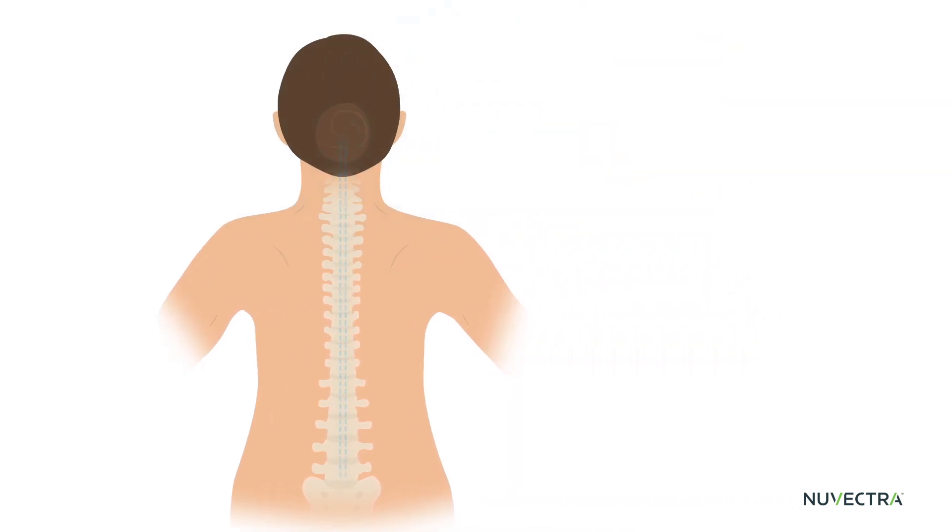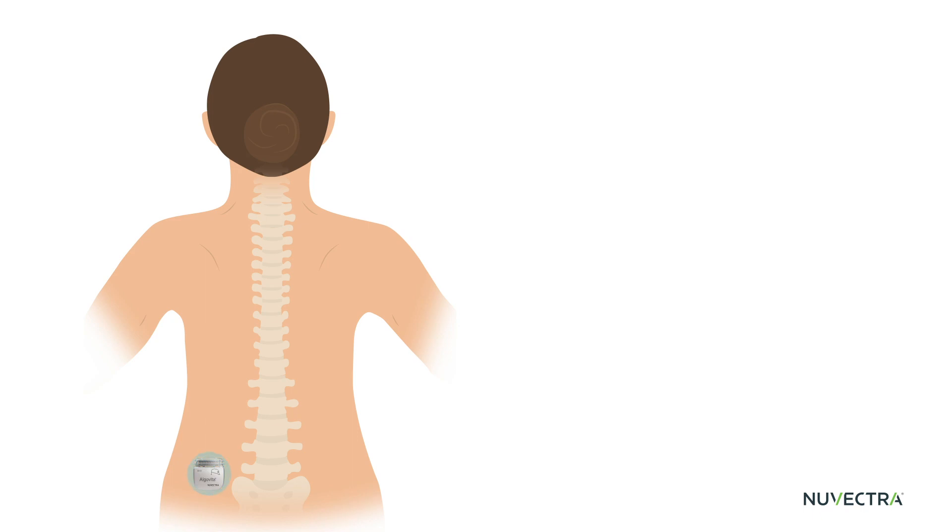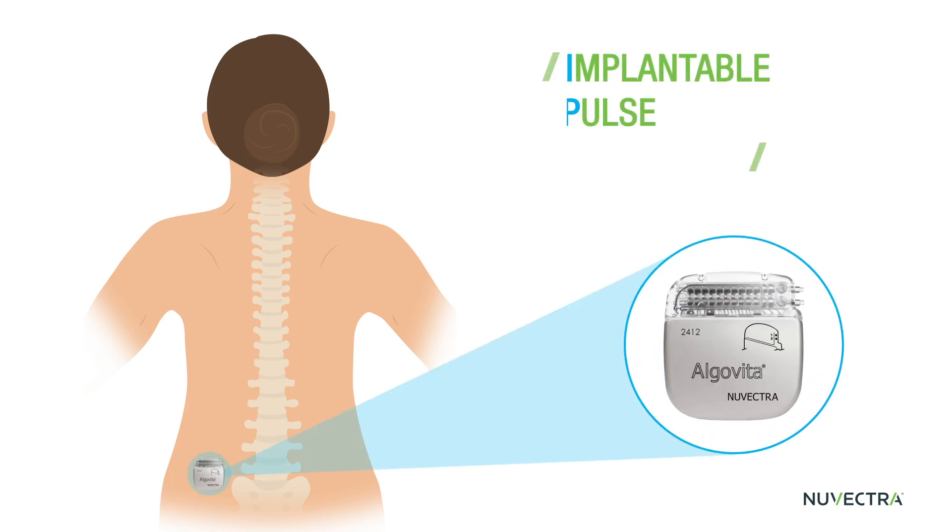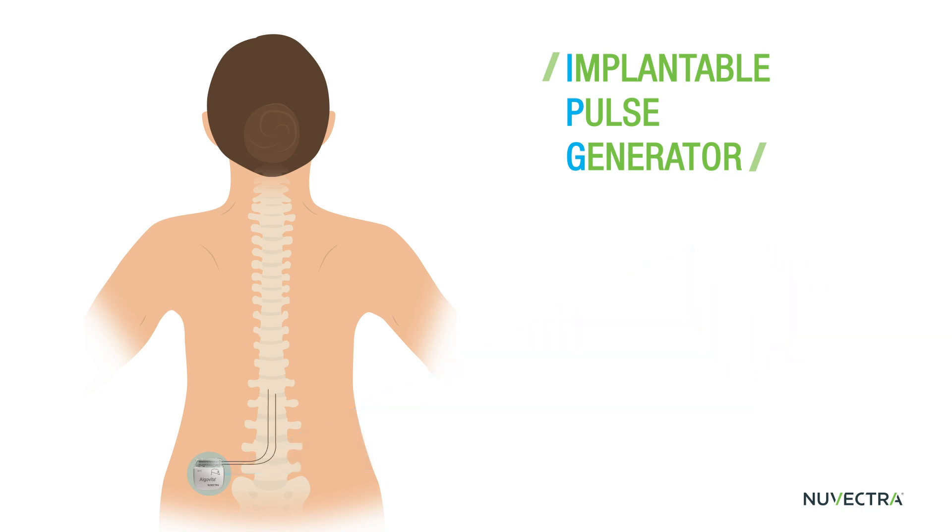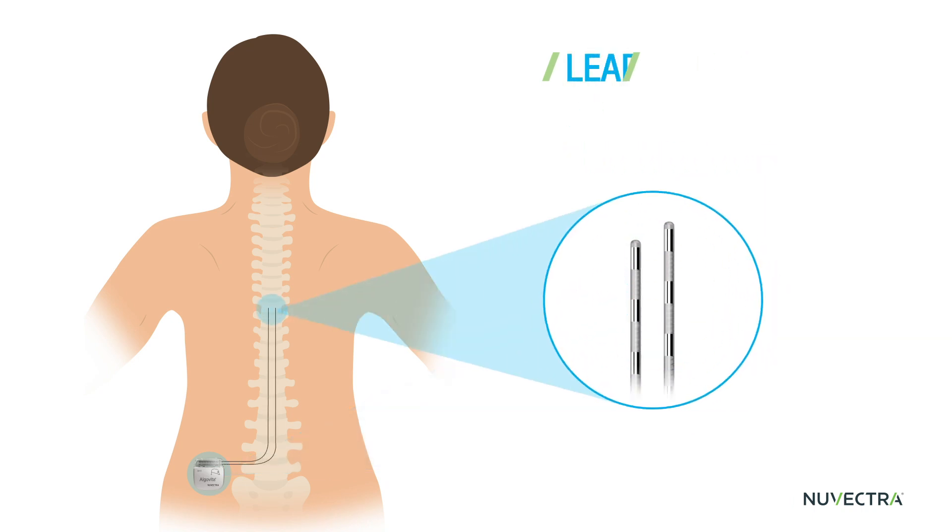The electricity used to stimulate the nerves is generated through a small device called an implantable pulse generator, or IPG, that is placed under your skin and connected to thin, flexible leads, which are placed in the epidural space of your spinal cord.